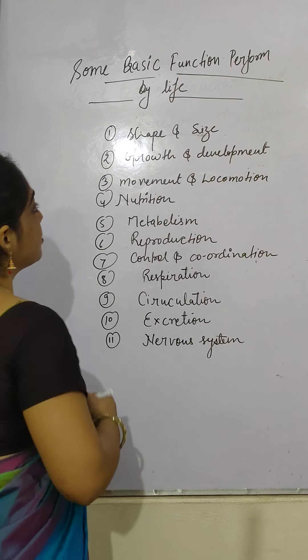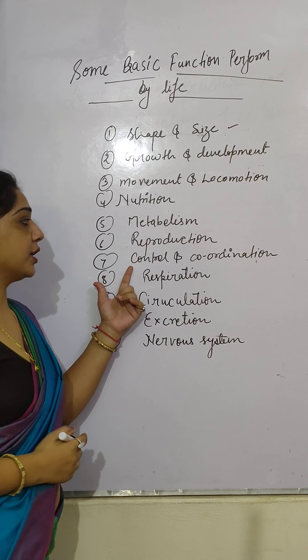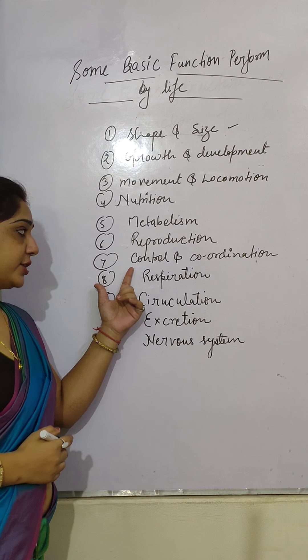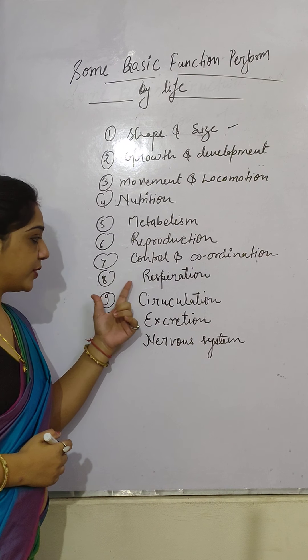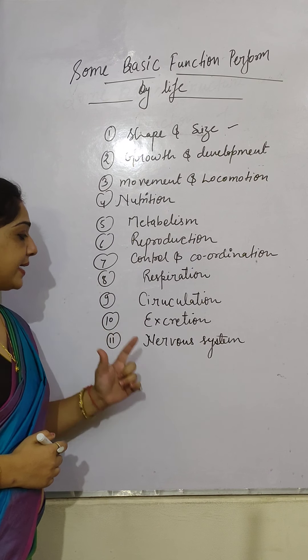The basic functions are: shape and size, growth and development, movement and locomotion, nutrition, metabolism, reproduction, control and coordination, respiration, circulation, excretion, and the nervous system. These are all the basic functions which are performed by living organisms, from the smallest to the largest microorganism.